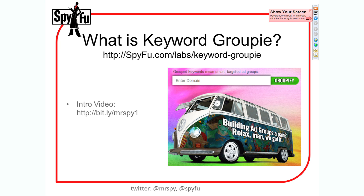So, first of all, what is Keyword Groupie? Keyword Groupie is this new tool where you can type in your domain — any domain — and see a list of all of their keywords broken down into categories. It's kind of like going to Home Depot and having everything laid out in aisles for you. What this does is it eliminates a lot of the really painful work that you do when you set up a pay-per-click campaign or when you're setting up a content marketing plan.